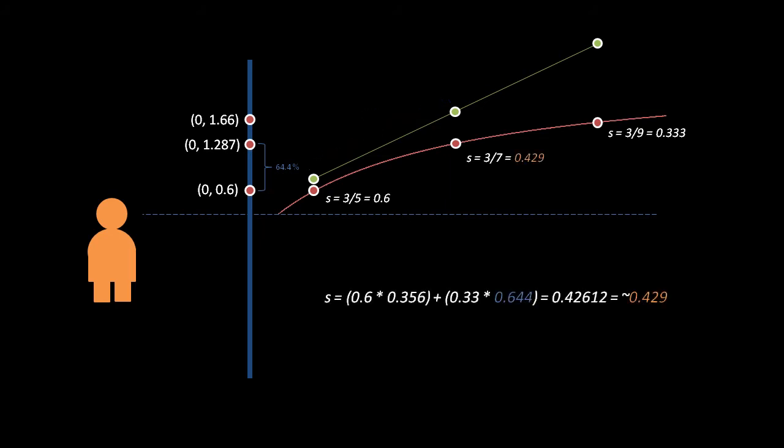Surprisingly, however, if we linearly interpolate between the scaling factors of the two endpoints by 64.4%, we get 0.429, the same scaling factor for the middle 3D coordinate. In fact, this holds in the general case. Using the alpha value of a point between the perspective-adjusted endpoints — that is, the distance by percentage between the two adjusted endpoints — using that alpha to interpolate between the endpoint scaling factors gets us the scaling factor which produces that perspective-adjusted point when multiplied by the corresponding 3D point.